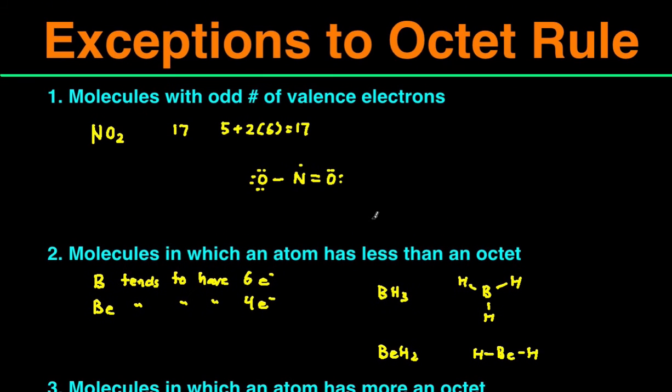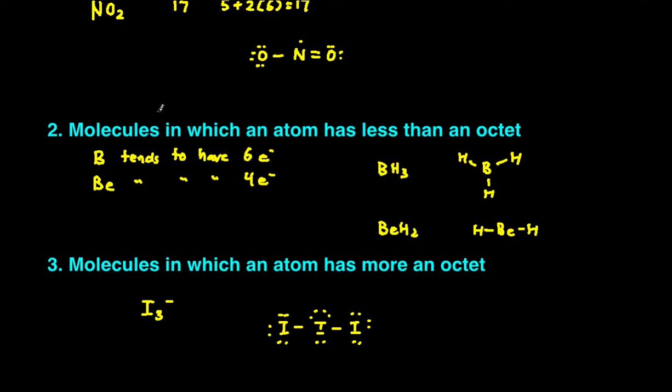And there you have it. Those are the three categories of exceptions to the octet rule. They are when you have an odd number of valence electrons in the molecule, or there are certain atoms that just have less than eight electrons around them like boron and beryllium, and then there are certain elements that can have more than eight valence electrons. Those are the elements in the third row and lower.